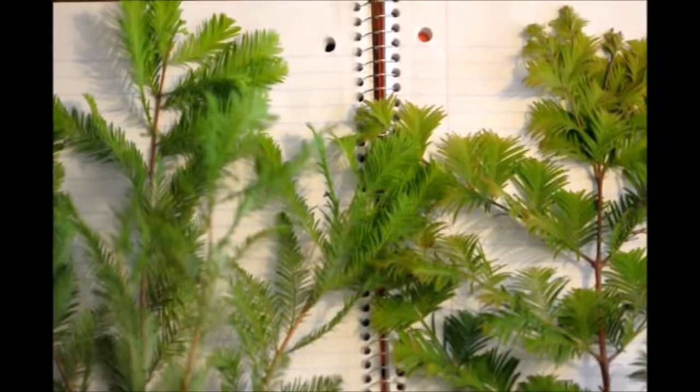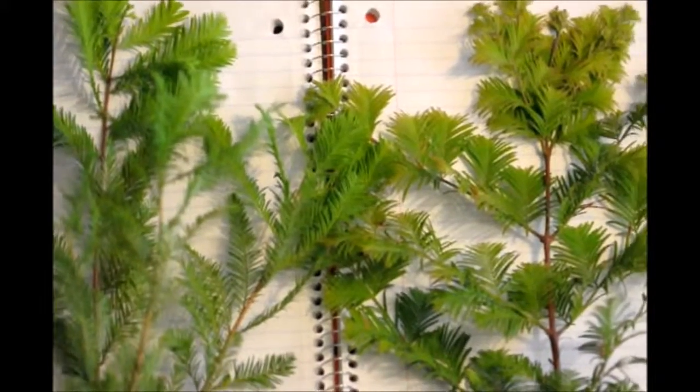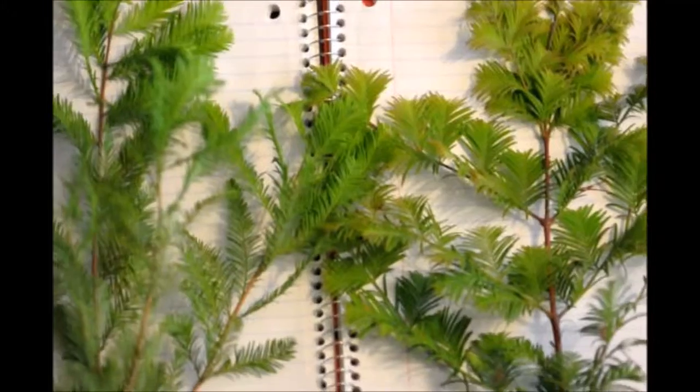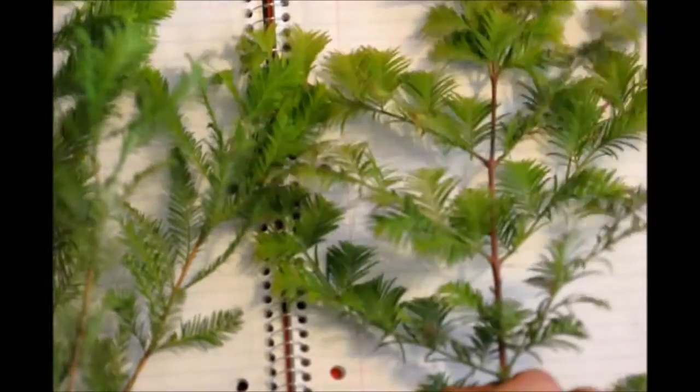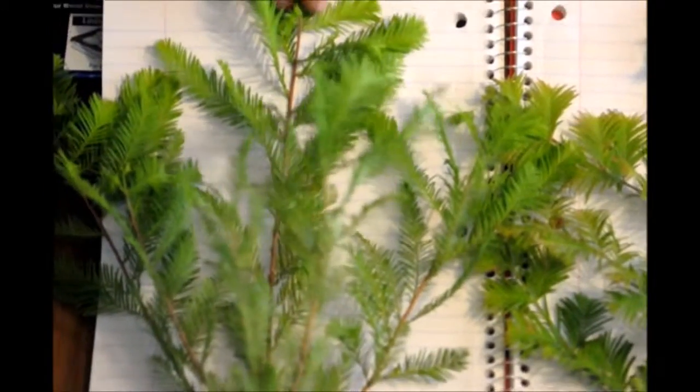To tell the two differences apart, the first thing we always look at is to see how the leaves are arranged on the stem. We call it either opposite, which is what the dawn redwood is, and alternate, which is what the bald cypress is.